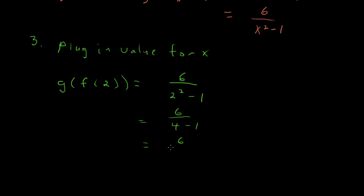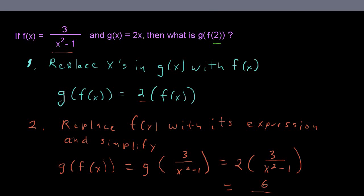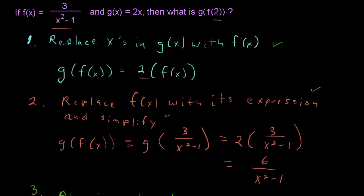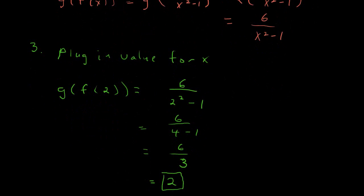Well, 4 minus 1 is 3. I like these easy parts to the problem. And finally, 6 divided by 3 is 2. So there really wasn't much to this. It's just mostly a review. The first thing we did was replace the x's in g(x) with f(x). You probably have done this many times before. And then we replaced f(x) with its expression, which was 3 over x squared minus 1. We just plugged that in. And simplified that.